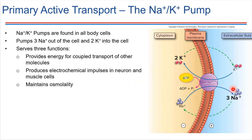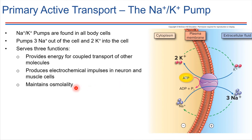For one thing, it establishes a concentration gradient for sodium that can then be used to drive transport of other things with secondary active transport. It also establishes an electrochemical difference outside versus inside the cell — we just transported three positive charges out and two positive charges in, so the extracellular fluid is more positive than the fluid inside. This is largely how neurons are able to send signals. The sodium-potassium pumps are also critical in maintaining normal osmolality.